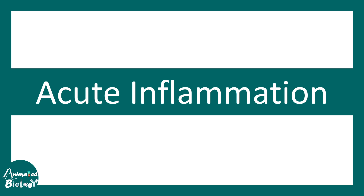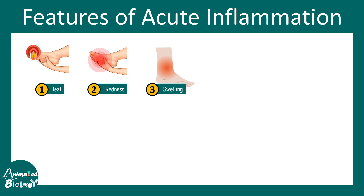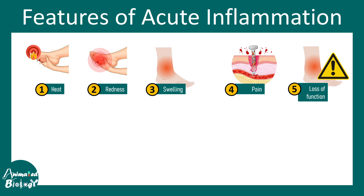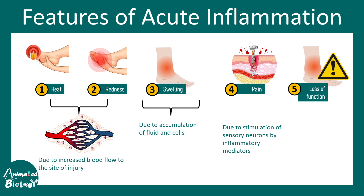The features of acute inflammation include heat, redness, swelling, pain, and loss of function. Heat and redness are due to increased blood flow to the site of injury. Swelling is due to fluid accumulation. Pain is due to stimulation of sensory neurons underlying the site of injury, and loss of function may be due to tissue damage.